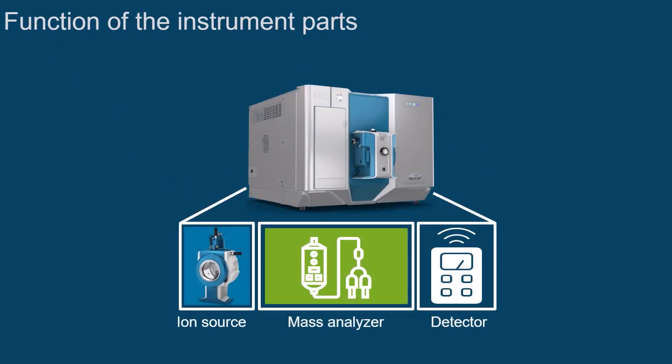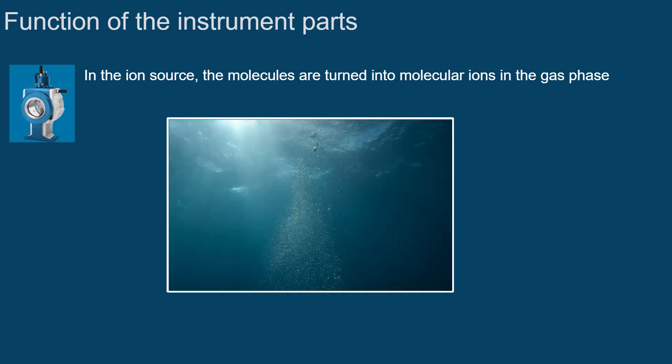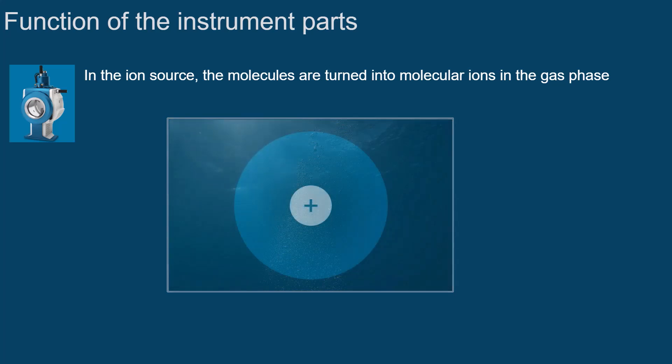Let's take a closer look at the three main functional parts of a mass spectrometer. The ion source is where the molecules are prepared for their detection as molecular ions in the gas phase. That is, the solvent is removed and ionization takes place.